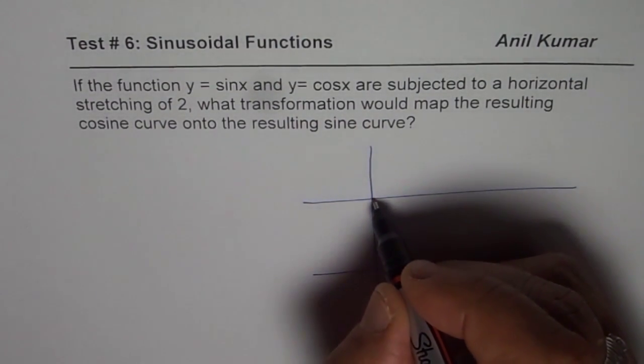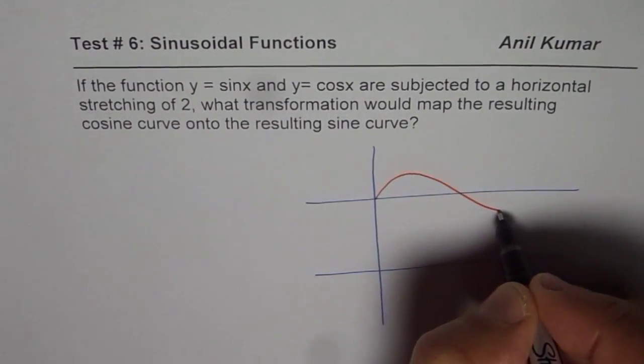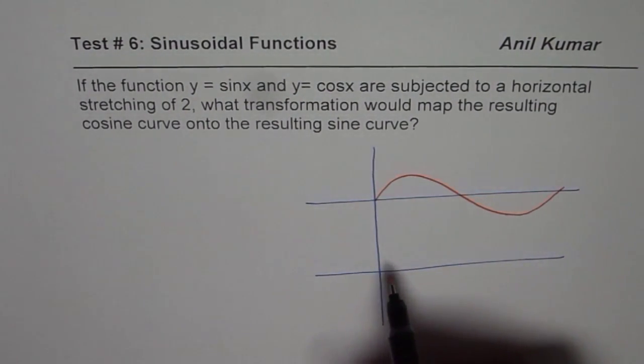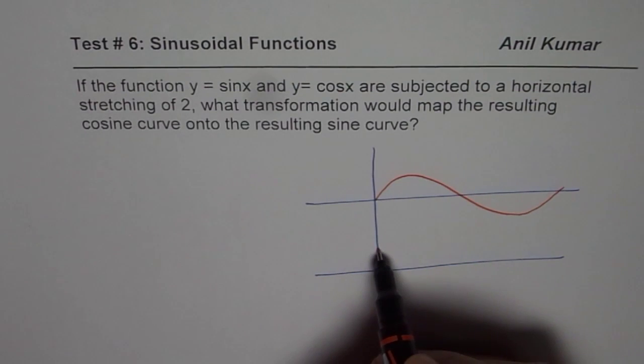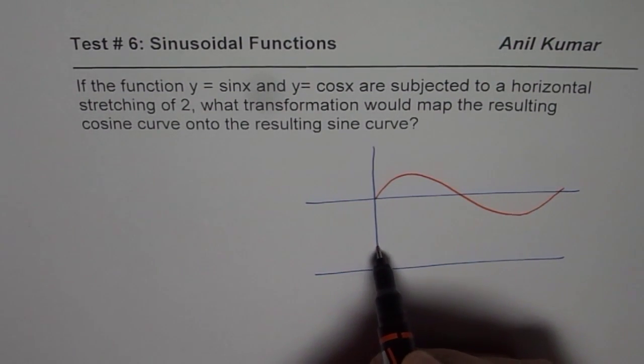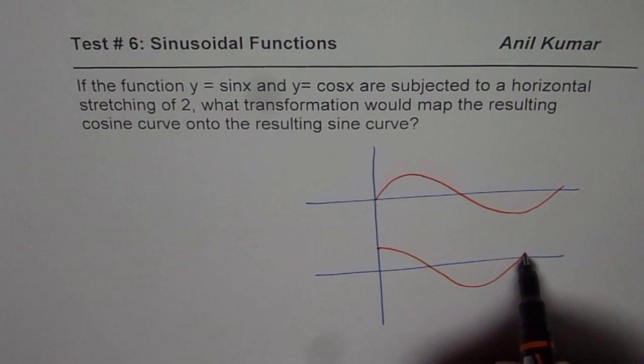When we talk about the sine function, it starts from the axis. So it is kind of like this. But when we talk about the cosine function, then it actually starts from the maximum value. So it is kind of like this.